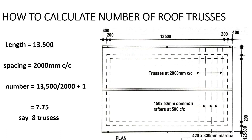Now let's find the number of trusses. Our length is 13,500mm — from this point up to this point. The truss starts immediately after the inside wall. We are going to take the spacing of 900mm center to center. To find the number, we take the entire length, divide by the spacing, and then add one. That gives us 7.775.